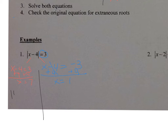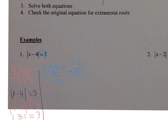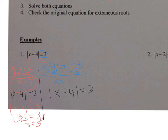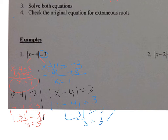Checking in the absolute value of x minus four equals three: plugging in seven gives the absolute value of seven minus four, which is the absolute value of three, which equals three. That checks — seven is a good answer. Checking x equals one: the absolute value of one minus four is the absolute value of negative three, which is three. That also checks. So my solution set is one and seven.